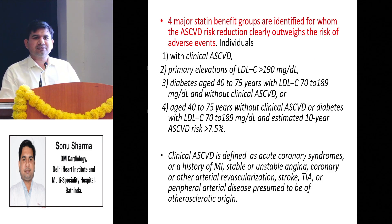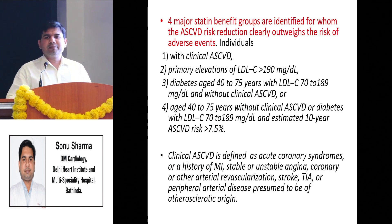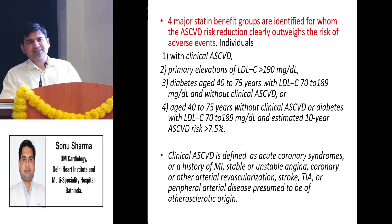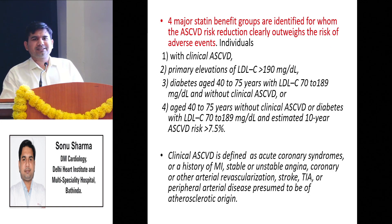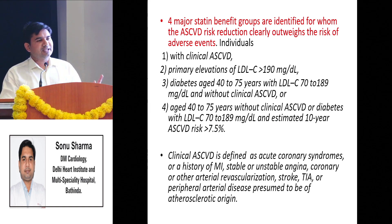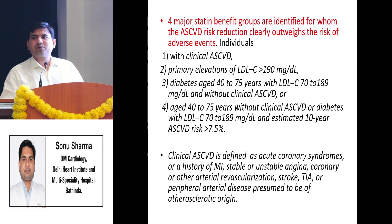The second group is primary LDL levels greater than 190mg/dL - give them minimum atorvastatin 40mg and rosuvastatin 20mg. The third group is diabetic patients aged 40-75 with LDL between 70-189 and without atherosclerotic cardiovascular disease - give minimum moderate-dose statins. The fourth group is patients aged 40-75 without atherosclerotic cardiovascular disease, without diabetes, LDL 70-189, and estimated 10-year cardiovascular risk more than 7.5% - still give minimum moderate-dose statins.